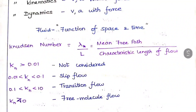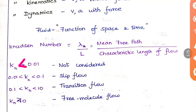When the Knudsen number is less than 0.01, the continuum concept does not hold and that value is not considered. When it is between 0.01 and 0.1, it is a slip flow. When it is between 0.1 and 10, it is a transition flow. When it is greater than 1, it is a free molecule flow.